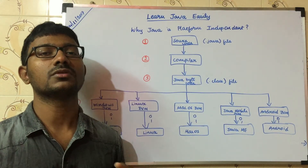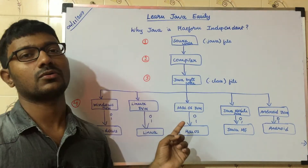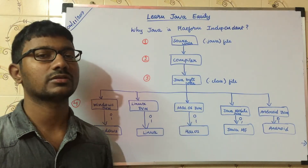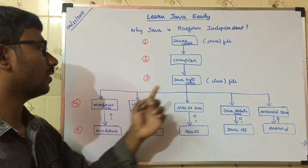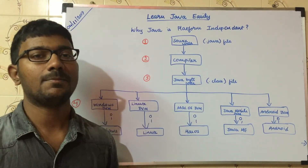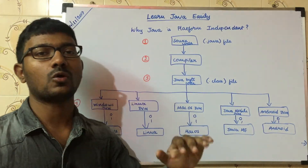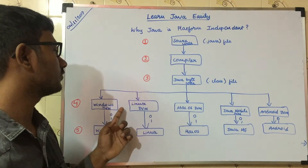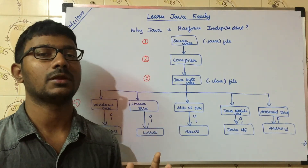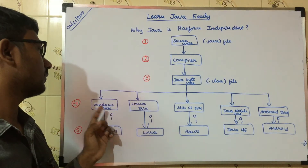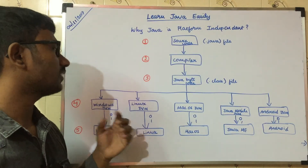The Java team provides the Java Virtual Machine for each platform. So the JVM will be able to run the .class file on Linux, Mac, and any other device. We run the .class file through the JVM and it runs all of these important functions. That is why Java is platform independent — if you have any Java Virtual Machine, you can run it.